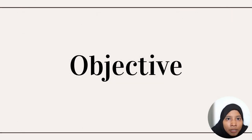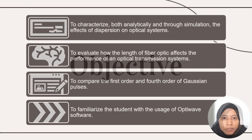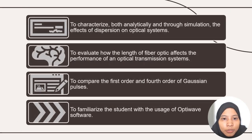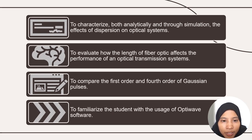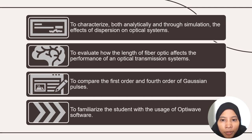The objectives of this assignment are: first, to characterize both analytically and through simulation the effect of dispersion on optical systems. Second, to evaluate how the length of fiber optic affects the performance of an optical transmission system. Third, to compare the first order and fourth order Gaussian pulses. Fourth, to familiarize students with the usage of OptiSystem software.